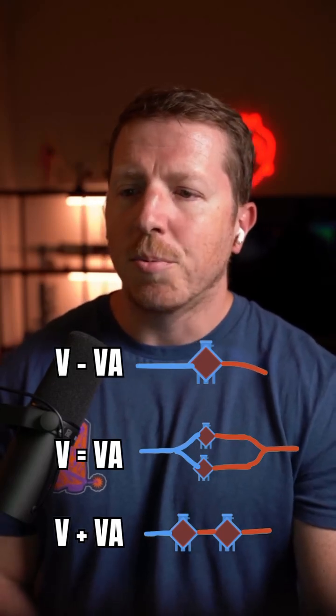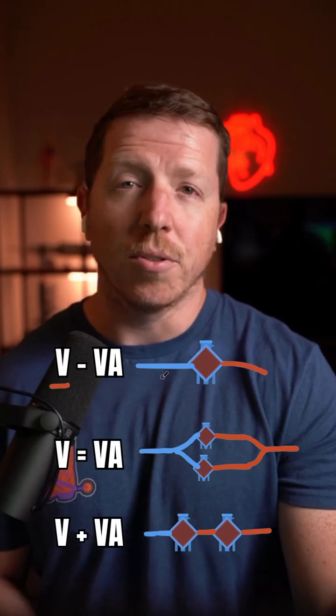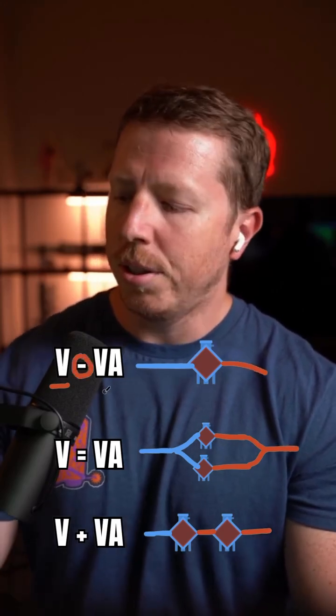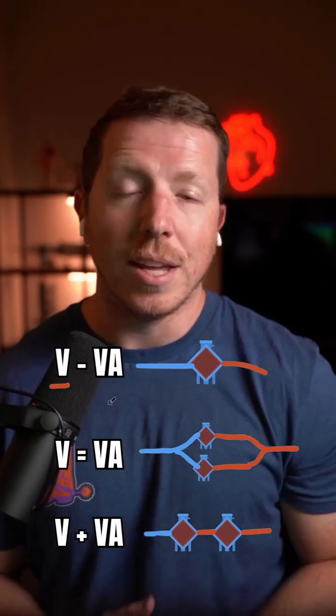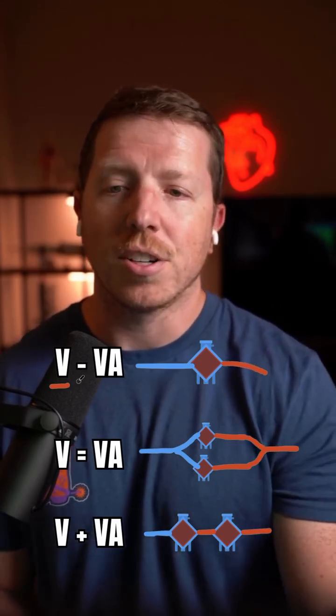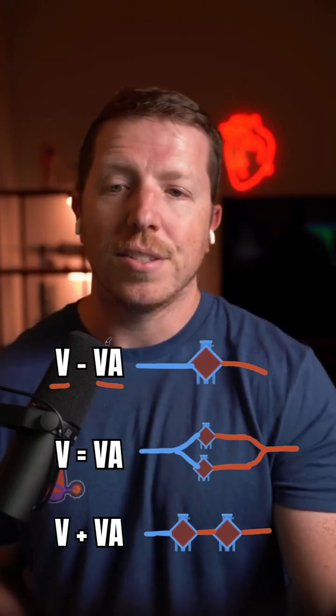On the left side, we have our drainage cannula or cannulas — a venous drainage site. The middle symbol, just one dash, represents the oxygenator; there is one oxygenator in this circuit. Then on the other side, we have our return cannula — in this case, a venous and arterial return cannula.